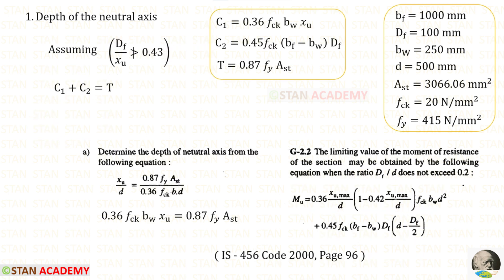Let us assume that DF upon XU is not greater than 0.43. We know that the summation of the compressive forces will be equal to the tensile force. To memorize these three formulas is difficult. Let us see a shortcut, how to take them from the code book. In this equation, we can eliminate D, and then we can arrange like this. Instead of B, we have to apply BW. This is C1, and this is T, and this is C2.